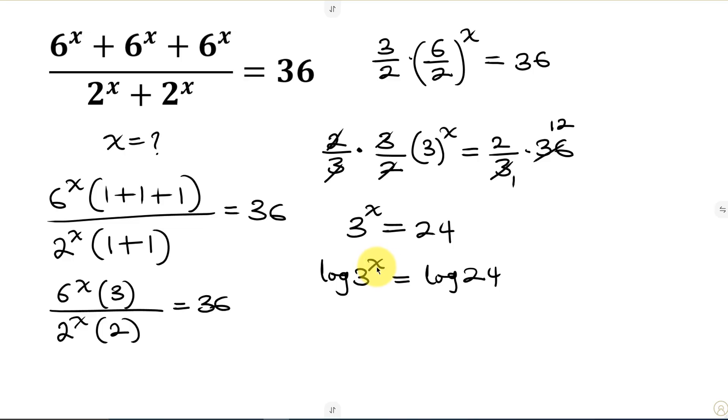Now I'll apply the power law of logarithm that says, when I have the log of a to the power of p, this can be expressed as p times log a. So we can rewrite this like this as x log 3. This is equal to the log of. Now 24 can be broken down into 3 times 8.